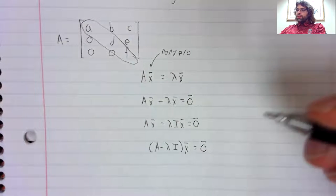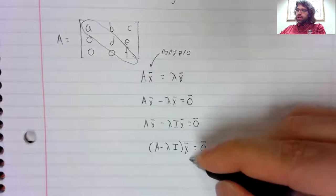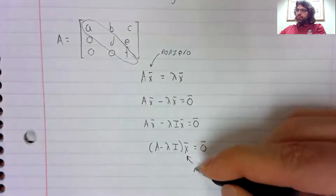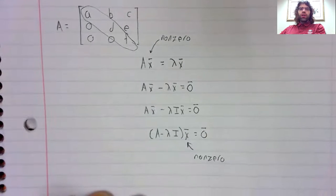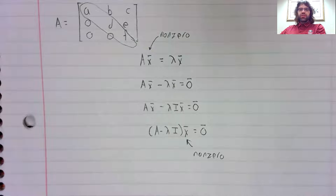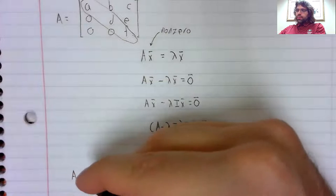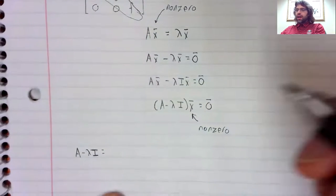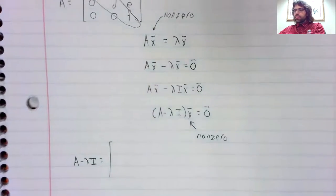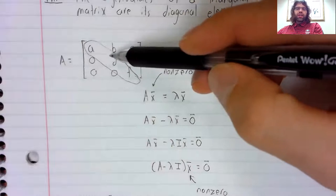So lambda is an eigenvalue if and only if there are non-zero solutions to this thing. Well, A minus lambda I. Lambda I has just ones down the diagonal.